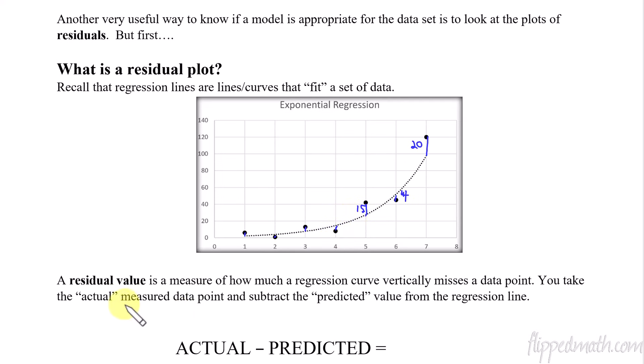So you take the actual measured data point, and you subtract the predicted value. That gives you what's called a residual. So the actual minus the predicted. The predicted is the curve. The actual is the literal, it's the point. It's the coordinate point that we have from the data set versus the predicted is the model. So subtract those things. You get the residual.